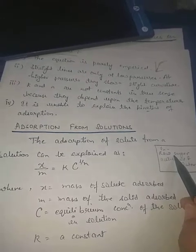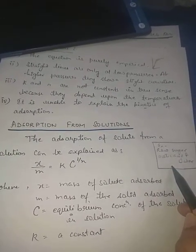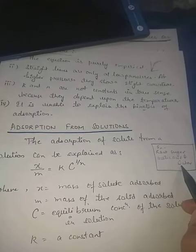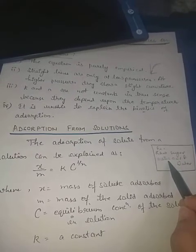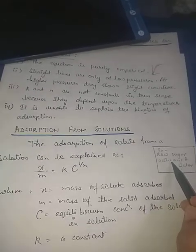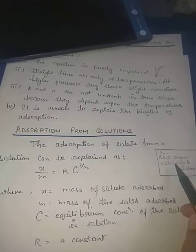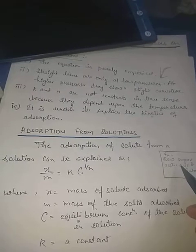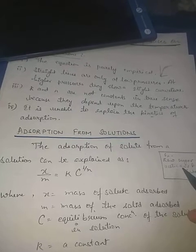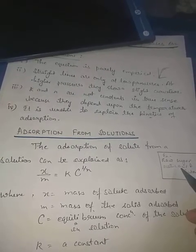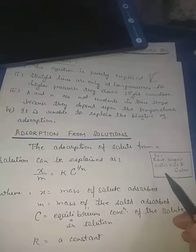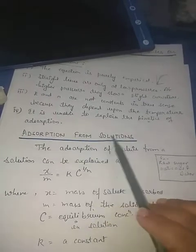Second, when an aqueous solution of acetic acid in water was shaken with charcoal, the concentration of acetic acid decreased in the solution, meaning acetic acid was getting adsorbed on the surface of charcoal. Similarly, when charcoal was added to litmus solution, the color of the litmus solution started fading and became colorless, meaning the colored components from litmus were getting adsorbed on the charcoal.